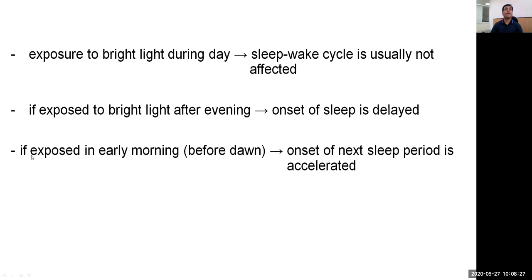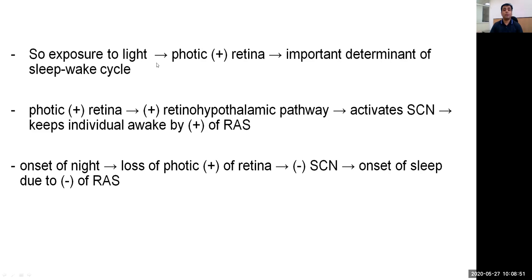Exposure to bright daylight during the day does not usually affect the sleep-wake cycle. If the individual is exposed to bright light after evening, onset of sleep will be delayed. If exposed to bright light early in the morning, onset of the next sleep period is accelerated. Exposure to light causes photic stimulation of the retina, which is an important determinant of the sleep-wake cycle. This stimulation occurs whenever the individual is exposed to light, and photic stimulation of the retina stimulates the retinohypothalamic pathway, activating the suprachiasmatic nucleus.